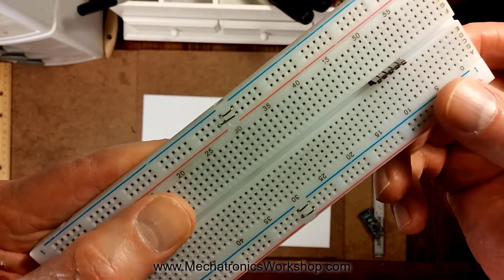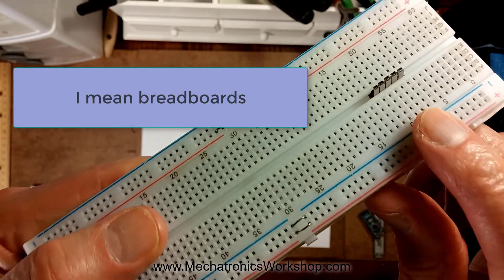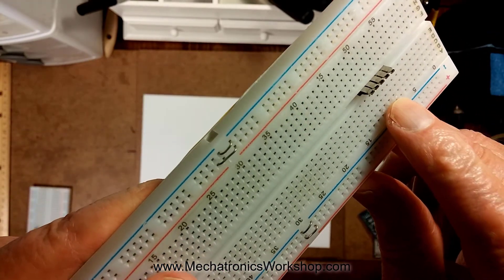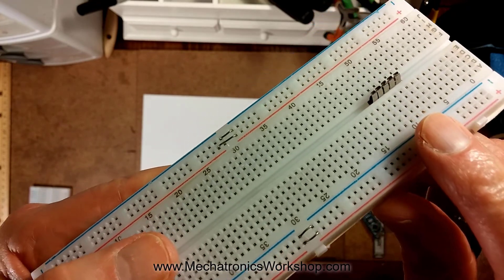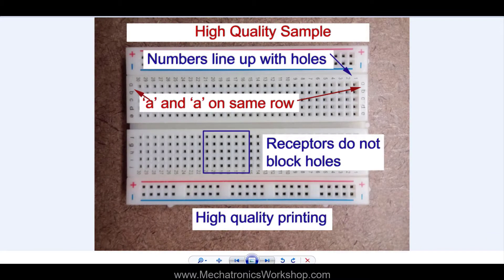And in the higher quality perf boards, those things are opened up more and allow easier access when you're sticking leads in there or trying to put your Arduino in the breadboard. Okay, let's take a look at some good and some bad boards so you know what to watch out for.